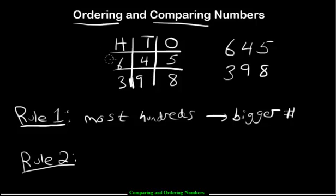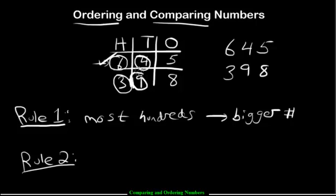So comparing these two numbers, 645 and 398 — this has 600s, this has 300s, so this one's the winner. Now I know you're all begging to ask: 9 is more than 4. That's a good point, 9 is more than 4. But you can't go to that section because the rule states that the number with the most hundreds is the bigger number. The key word is most hundreds — not tens, not ones, but hundreds.